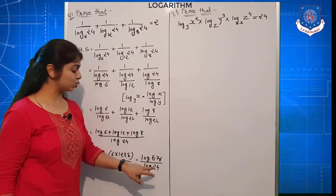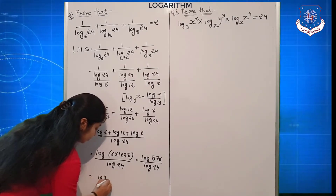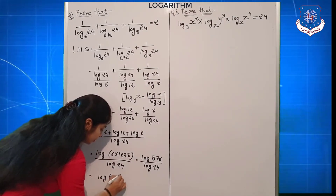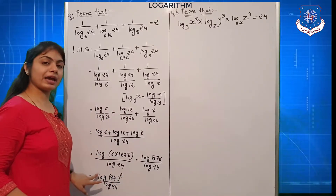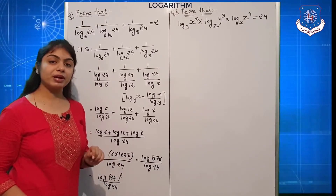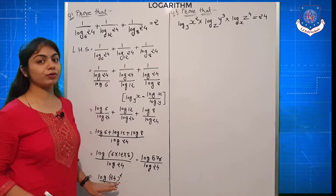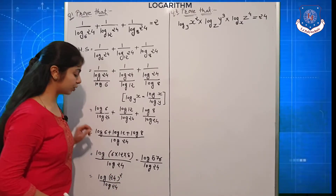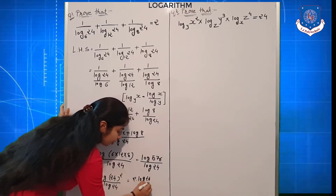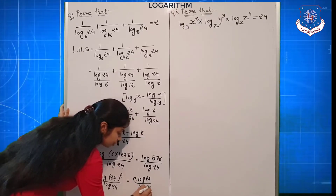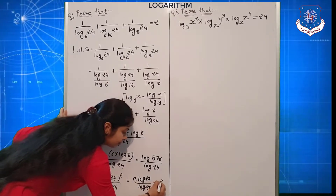Now, 576 is the square of 24. So this becomes log(24²) divided by log 24. Applying the third fundamental law — the power law — the 2 comes out as a multiplier: 2 × log 24 divided by log 24. Log 24 and log 24 cancel out, and the answer is 2.